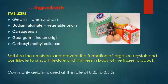Another important non-dairy ingredient is stabilizers. Gelatin is of animal origin, prepared from animal bone — nowadays, ice cream using gelatin is clearly classified as non-vegetarian. Sodium alginate is of vegetable origin. Carrageenan is prepared from seaweed. Guar gum is of Indian origin. Carboxymethyl cellulose is one of the oldest commercially used stabilizers. These stabilizers stabilize the emulsion of fat and non-fat ingredients, prevent the formation of large ice crystals, and contribute to smooth texture and firmness. Gelatin is commonly used at 0.25 to 0.5%.